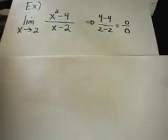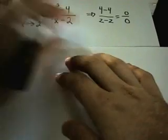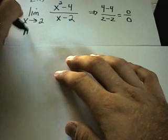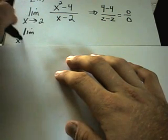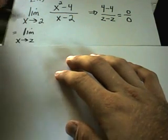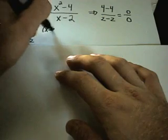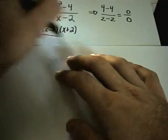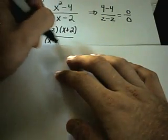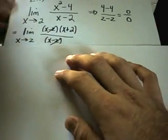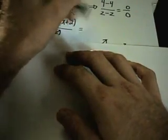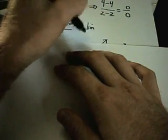This is where your factoring skills kick in because notice that you can factor the numerator, x squared minus 4, as x minus 2 times x plus 2. I have this x minus 2 on the bottom, so I can cancel that out. This is what you do with limits - you try to do something algebraic so that you can simplify them.